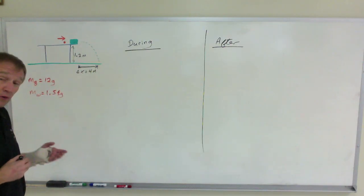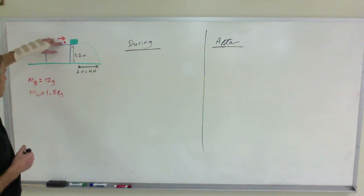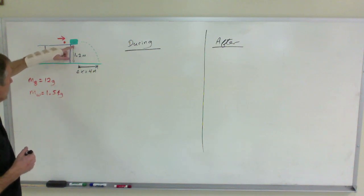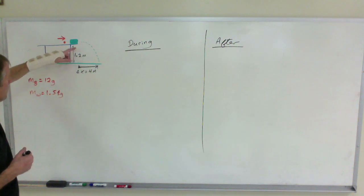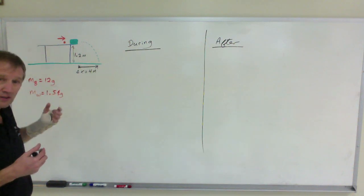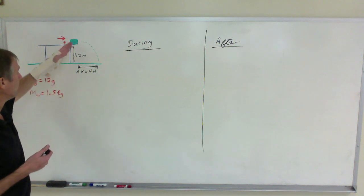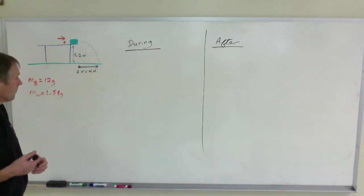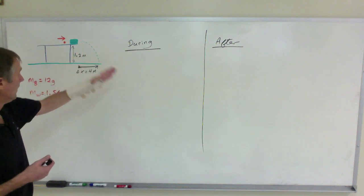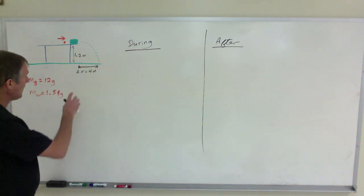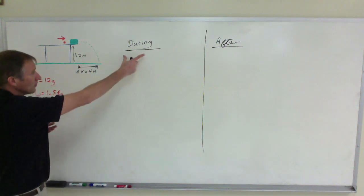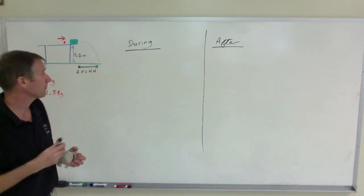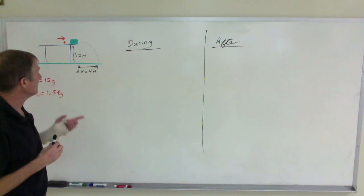This is a two-part problem — a more difficult question. We have a bullet being fired into a wooden block. The wooden block rests on the edge of a table that is 1.2 meters high. The bullet embeds itself inside the wooden block, and the bullet and block go sailing off the end and hit the ground 4 meters from the edge of the table. So that is a projectile question. We are looking at during and after the collision to determine the speed of the bullet before it hits the wooden block.